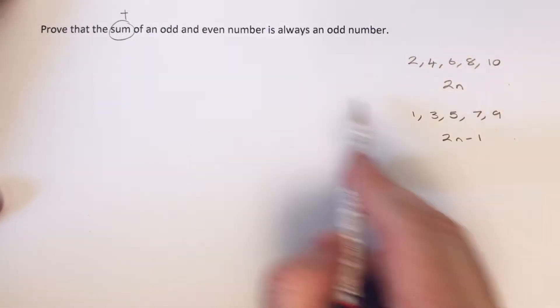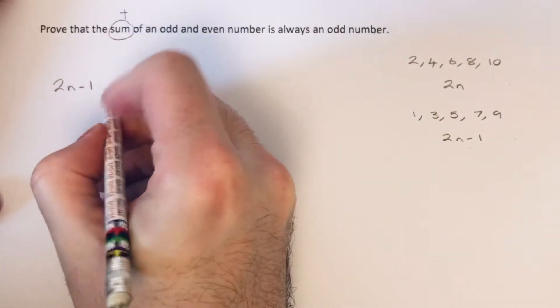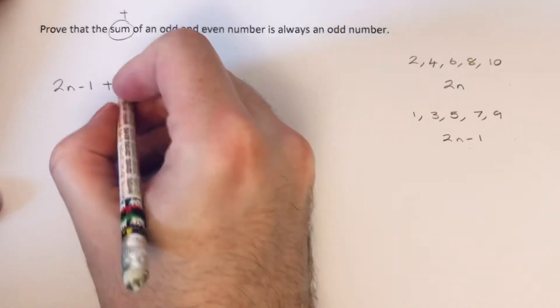We're going to use 2n minus 1 for our odd number, and add on our even number, which is 2n.